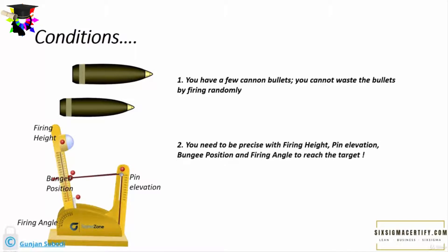You need to be precise with the height of the cannon bullet, the bungee position, pin elevations, and the firing angle. These four terms are the factors in designing the experiment in this case. We will learn what factors and other related terms mean in more depth in the coming lectures. So we need to fix the firing height, bungee position, pin elevation, and firing angle in order to reach the target and break the fort wall.